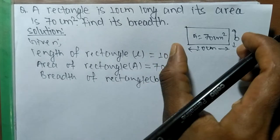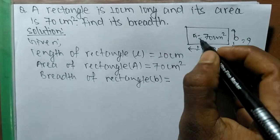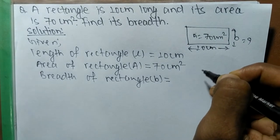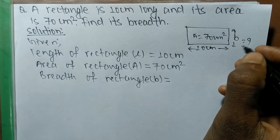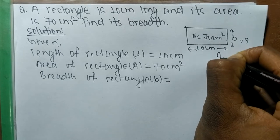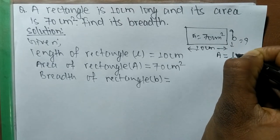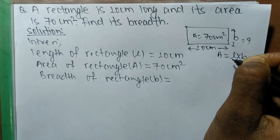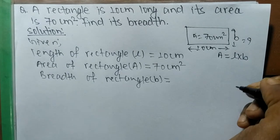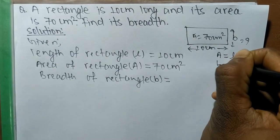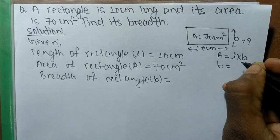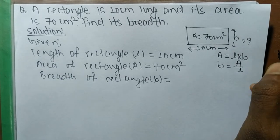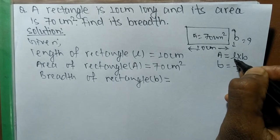The area and length of the rectangle are given and we have to find its breadth. As you know, the area of a rectangle is equal to L times B — length times breadth. When we have to find out breadth, then B is equal to A divided by L.